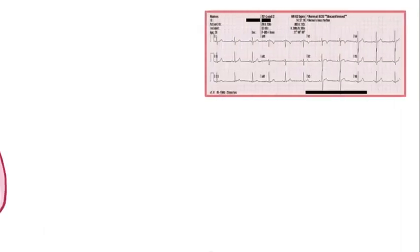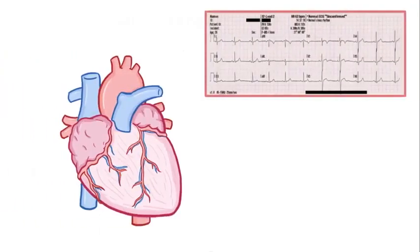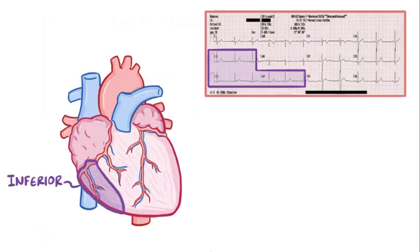Now all the limb leads and chest leads can be grouped based on the regions of the heart that they're nearest. Problems in specific leads or groups of leads suggest that there might be a specific region of the heart that might be affected by a disease. Leads 2, 3, and AVF are inferior leads because they're near the inferior wall of the heart which receives blood from the right coronary artery.